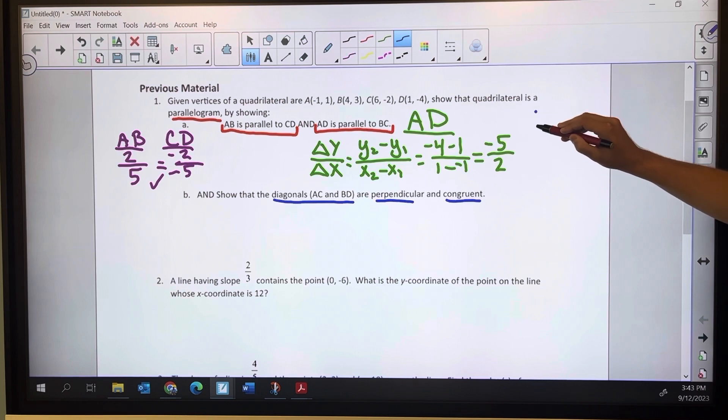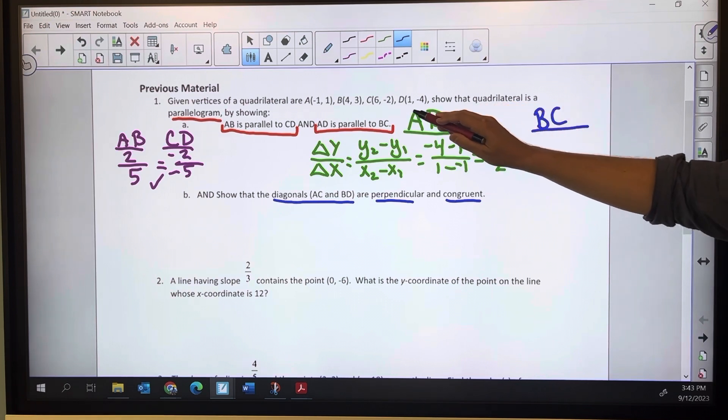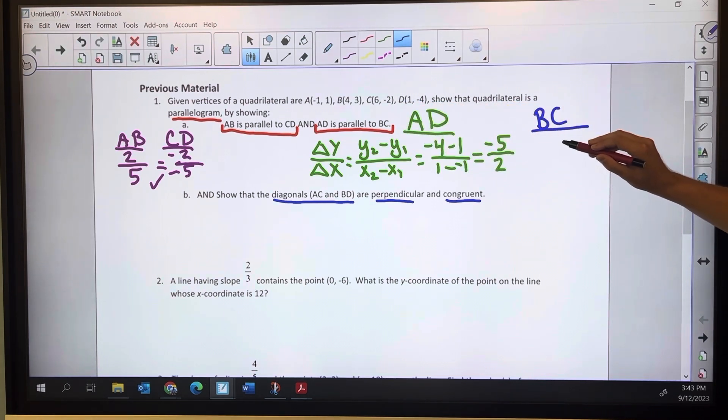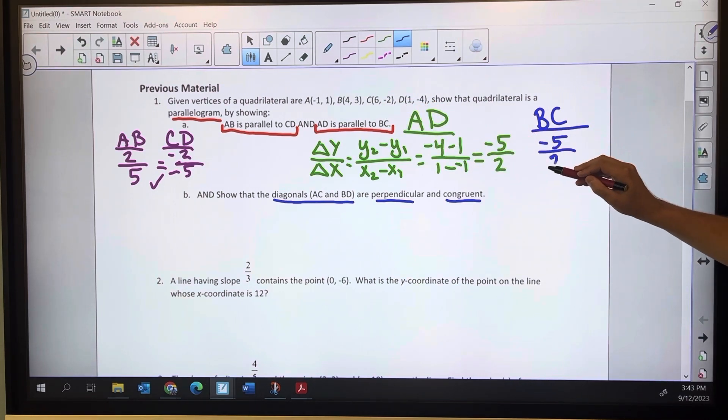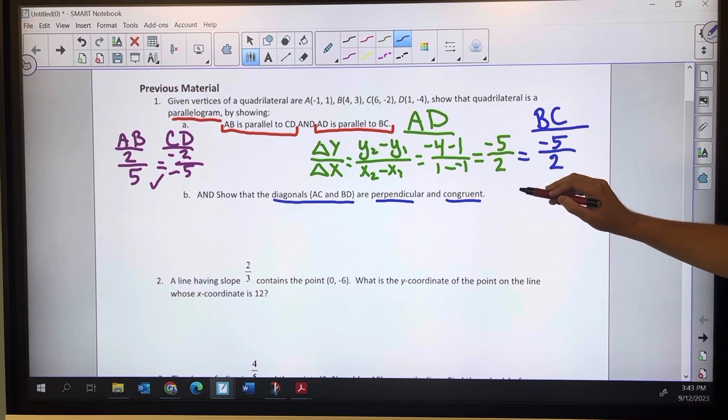And let's speed this up for BC. We're going to do the same process. The change in Y, we've got negative 2 minus 3, negative 5. 6 minus 4, that's 2. And these are equal. So yes, we have parallel sides.